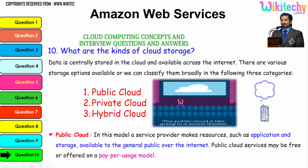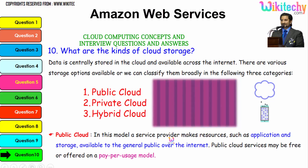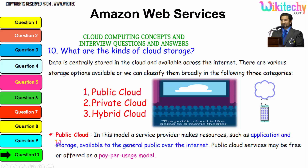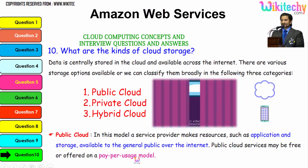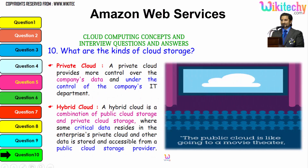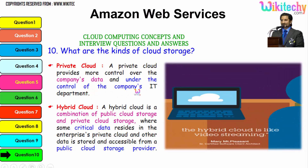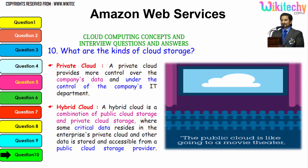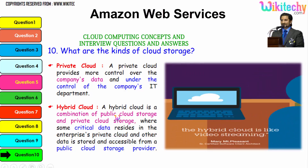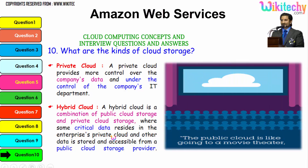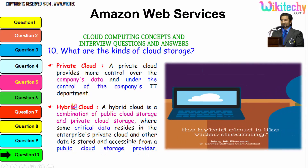Hybrid cloud is a mix of private and public cloud. By definition, in the public cloud model, a service provider makes resources such as applications and storage available to the general public over the internet — services may be free or on a pay-per-usage model. Private cloud provides more control over company data and is under the company's IT department. Hybrid cloud is a combination of public and private cloud storage, where critical data resides in the enterprise private cloud and other data is stored with a public cloud provider.